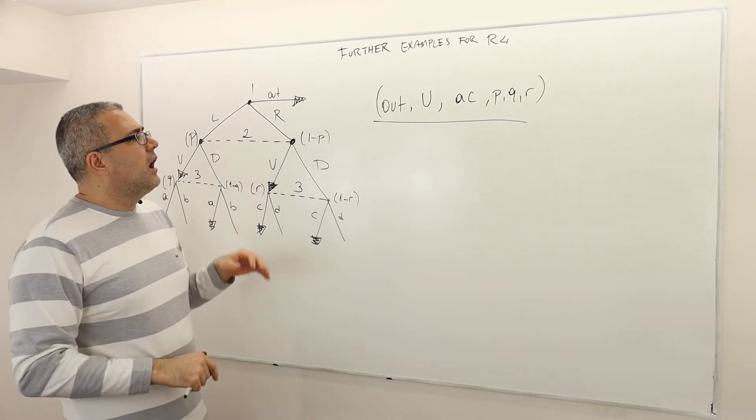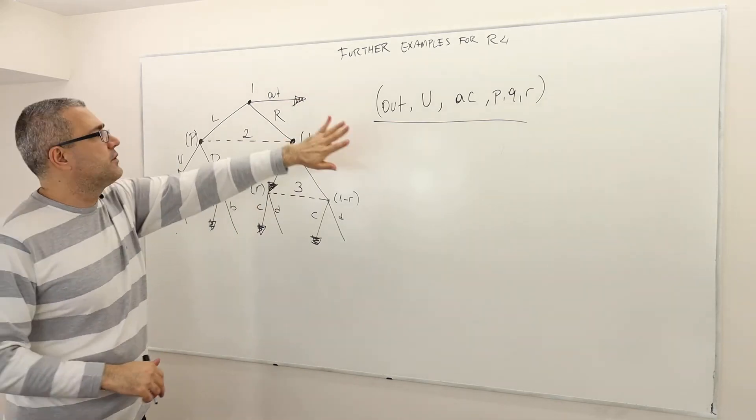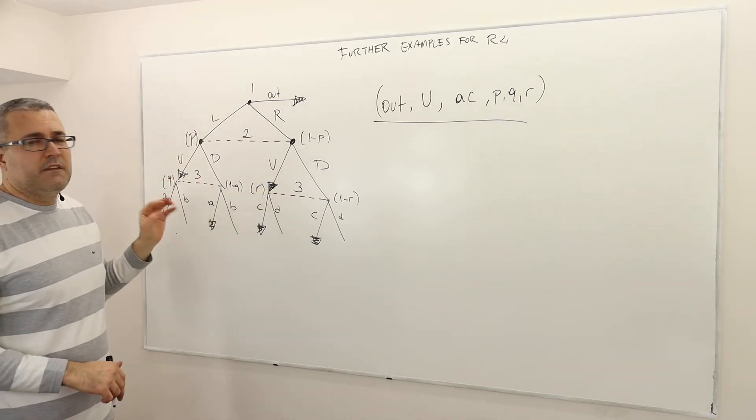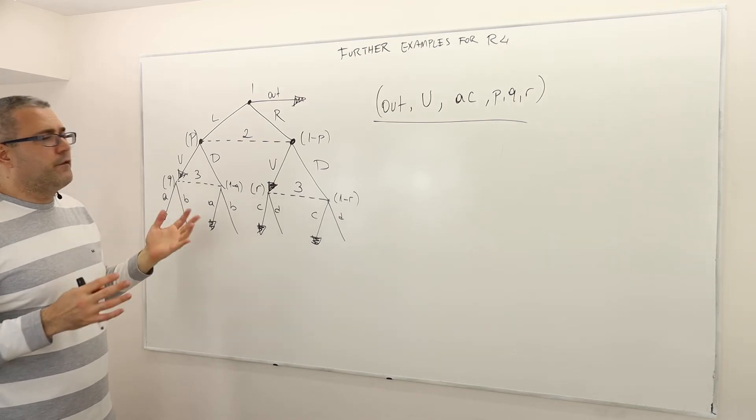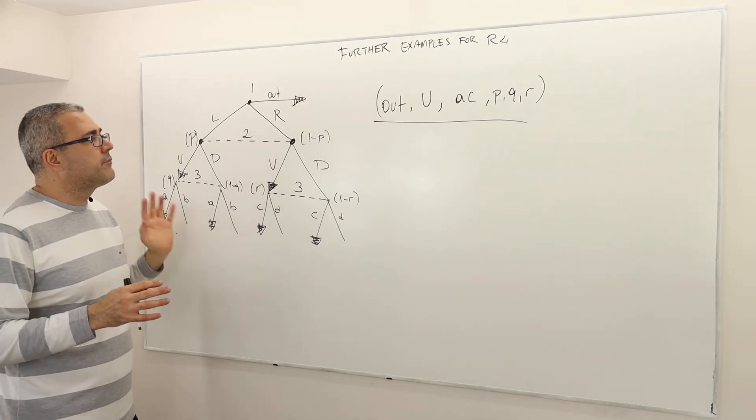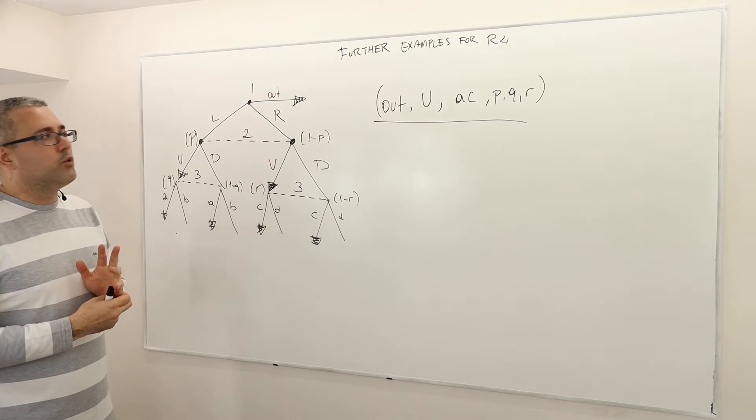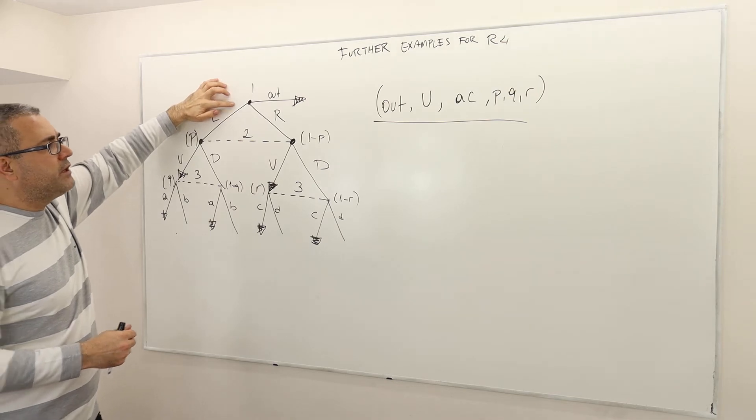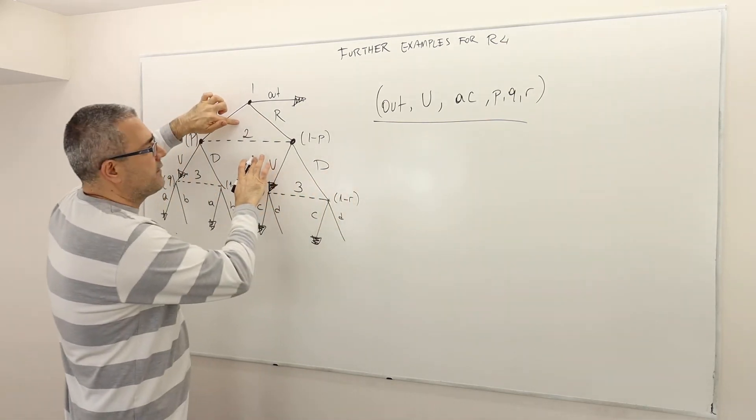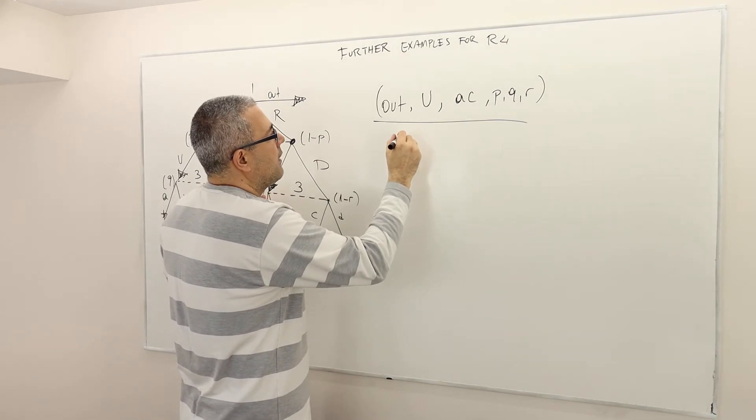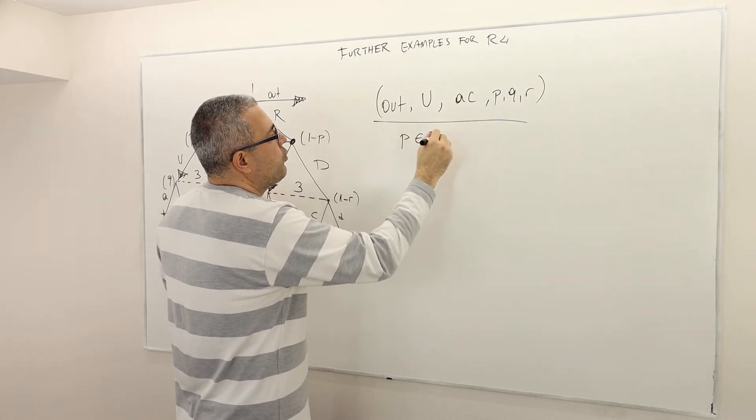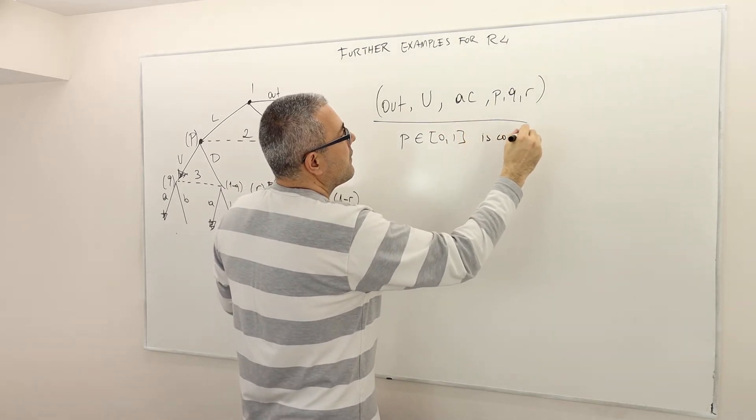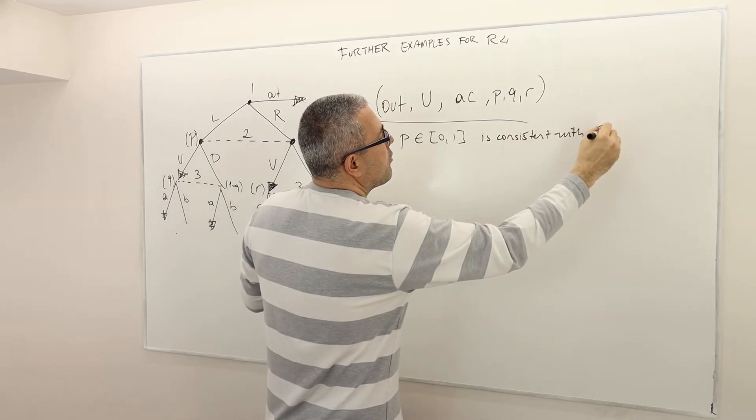The question is, according to this strategy profile, the second player's information set and the third player's information sets are all off the equilibrium path. But can I still use the Bayes rule? Once again, I cannot use the Bayes rule for 2's infoset. Therefore, P between 0 and 1 is consistent with requirement 4.